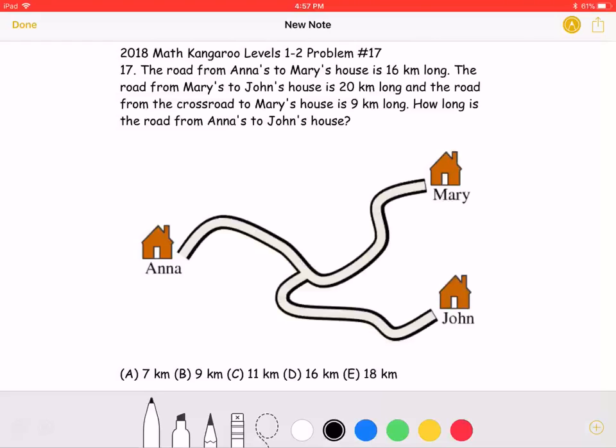This is the 2018 Math Kangaroo Levels 1-2 Problem Number 17. The road from Anna's to Mary's house is 16 kilometers long. The road from Mary's to John's house is 20 kilometers long. And the road from the crossroad to Mary's house is 9 kilometers long. How long is the road from Anna's to John's house?